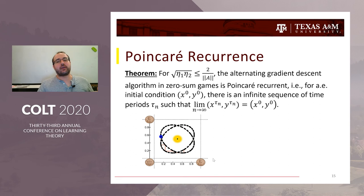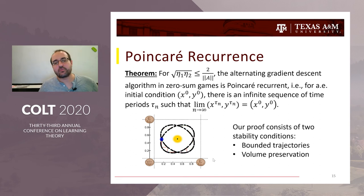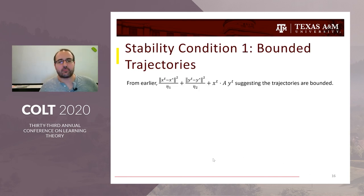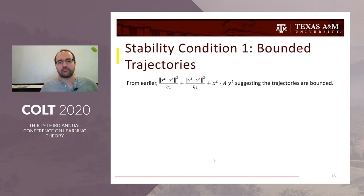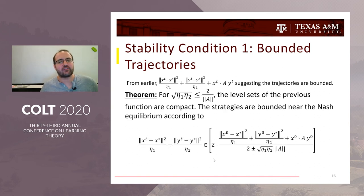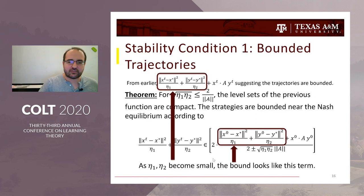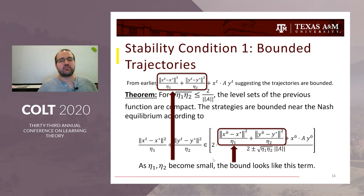The standard way to show Poincaré recurrence is by establishing two stability properties: bounded trajectories and volume preservation. Despite discrete updates, we have a smooth continuous function that describes all the trajectories for all time. The fact that it looks like distance suggests the trajectories are bounded. To formally show they are bounded, you need the learning rates to be sufficiently small, so that the level sets of the energy function are compact, giving bounded orbits close to the initial energy.